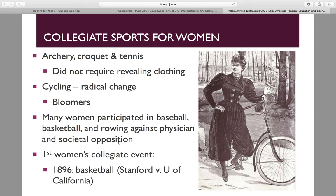Collegiate sports for women — in 1895, archery, croquet, and tennis did not require revealing clothing, so they were the most widespread. Cycling was a radical change for the sake of the outfits that were worn — women cycling athletes wore bloomers, which was considered revealing clothing, very different from how we see activewear today. Many women were able to participate in baseball, basketball, and rowing against physician and societal opposition. Women were thought to have their role at home and to keep their bodies healthy to bear children, and physicians and societal views thought physical activity was going to harm their bodies.